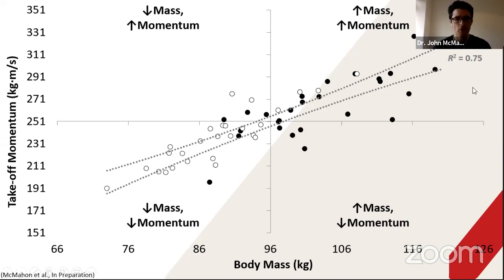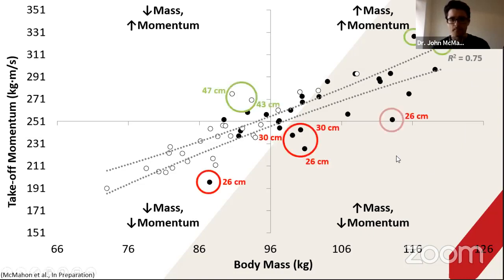But you've got some guys in this situation here - if we really tease this out - where there's a cluster of forwards that are falling into this high body mass but low momentum category.